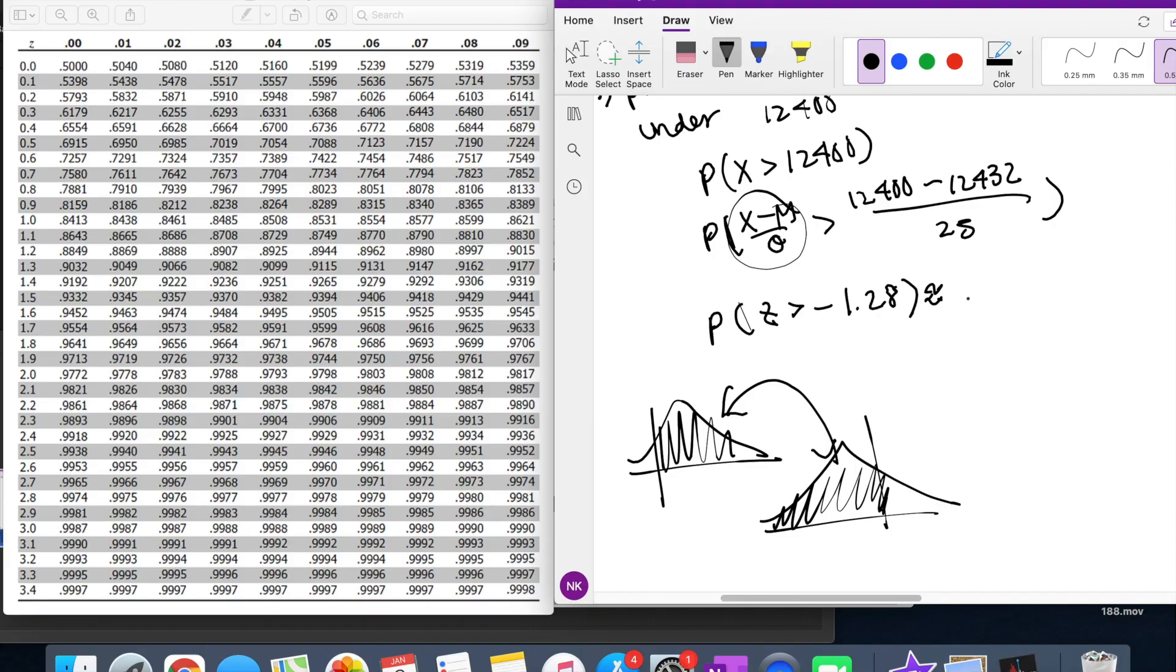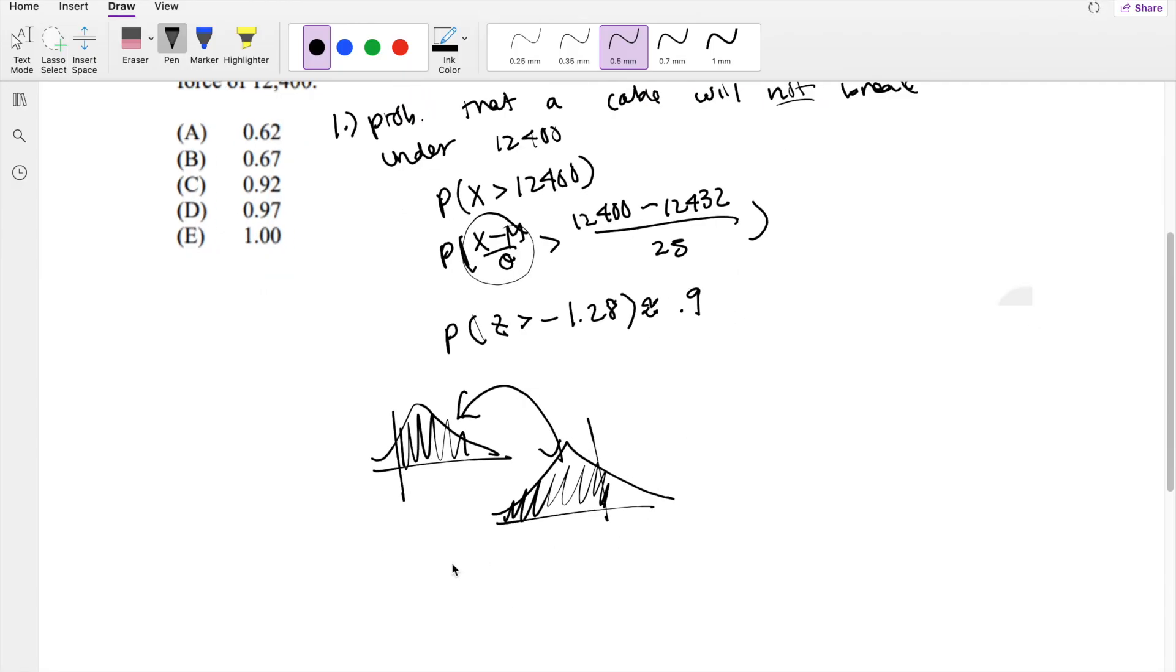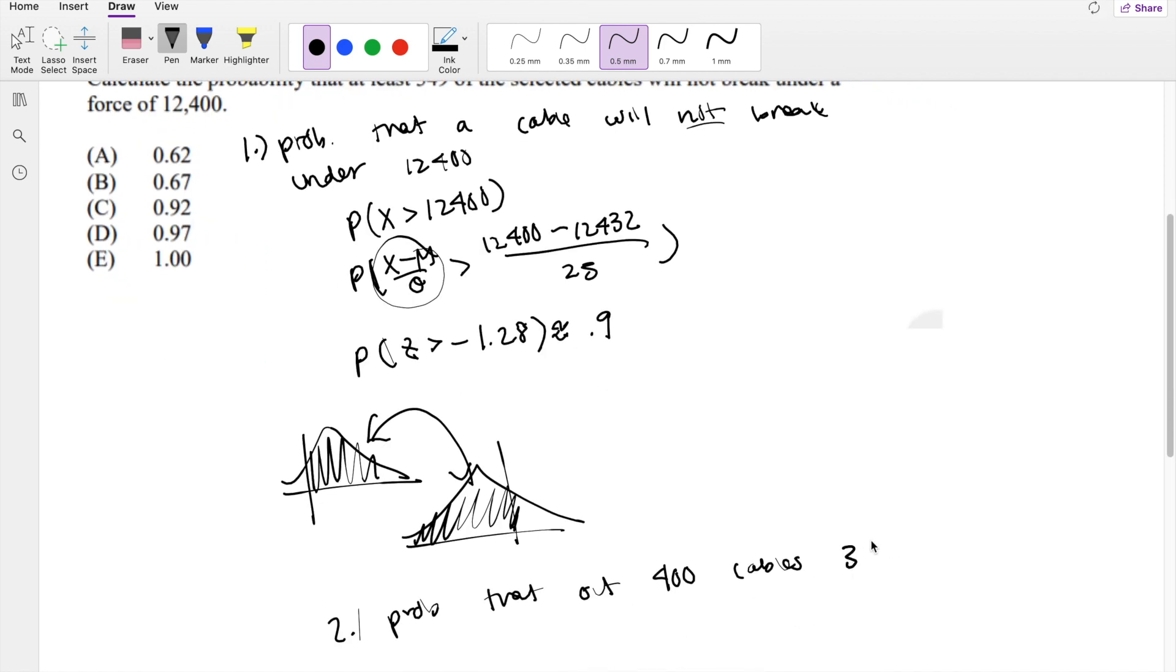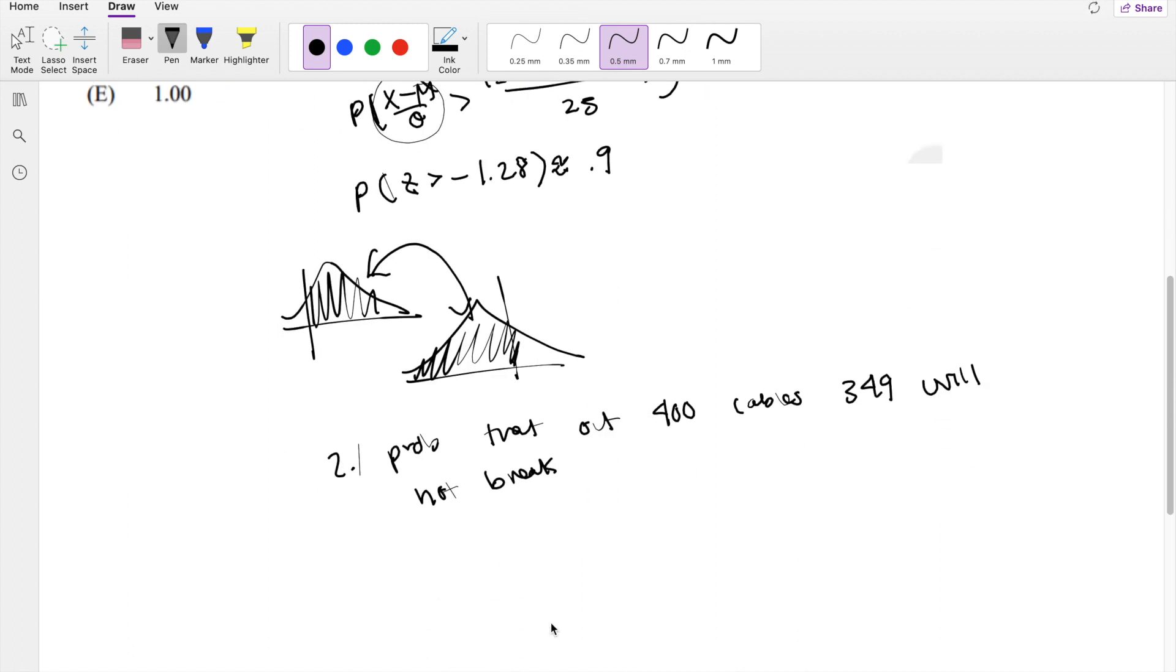So now step two is to find the probability that out of 400 cables, 349 of them will not break. We know the probability of not breaking equals 0.9. So the variance equals n times p times q because this is a binomial distribution. It can either break or not break. So n is 400, p is 0.9, q is 0.1. This equals 36.